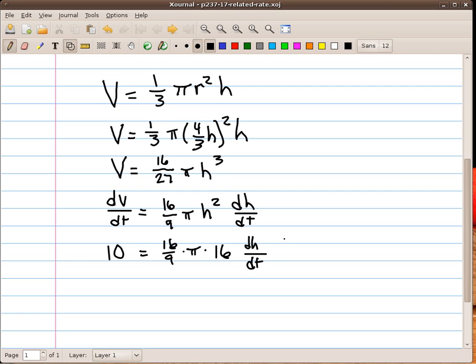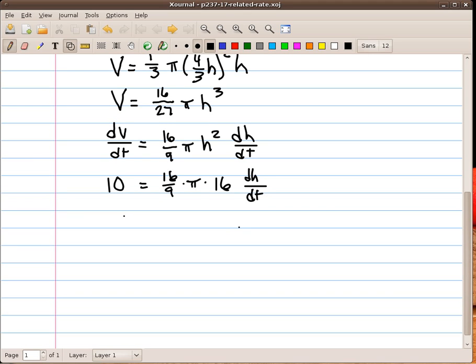I've done some calculations. And as it turns out, 16 ninths times pi times 16 happens to be 89.3156. So when I'm solving for dh dt, I want to divide 10 by 89.3156. And that works out to be about 11.196.